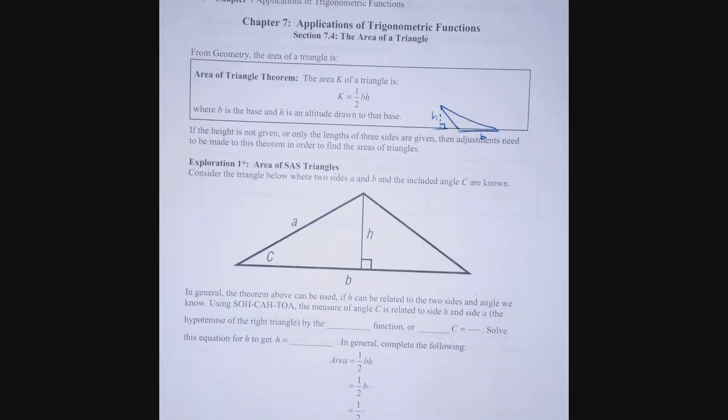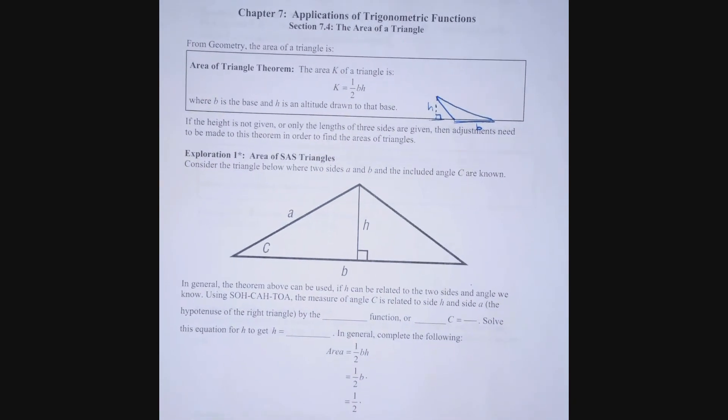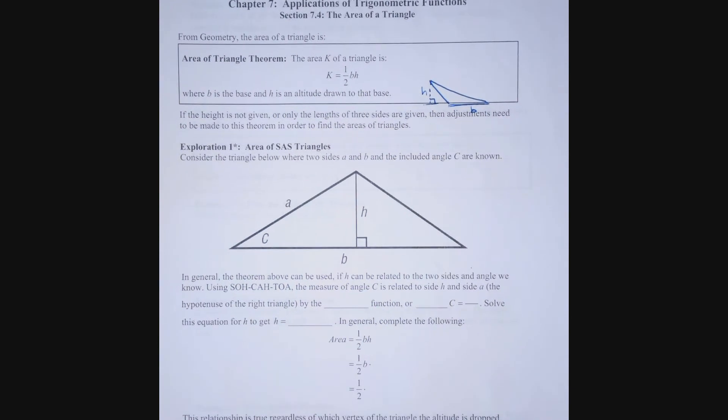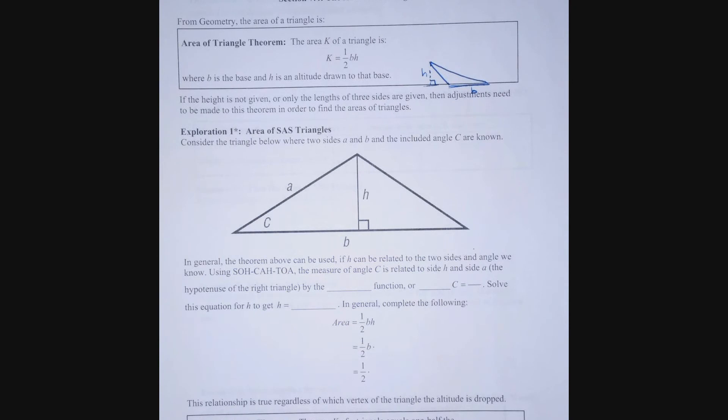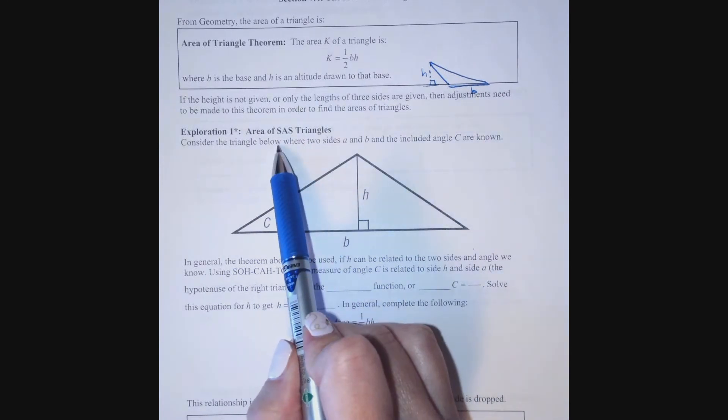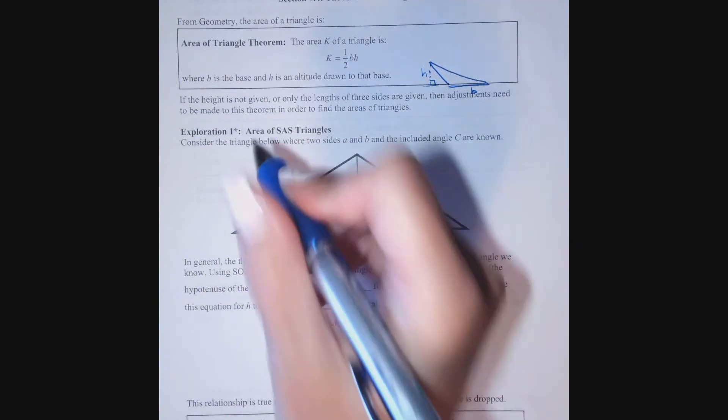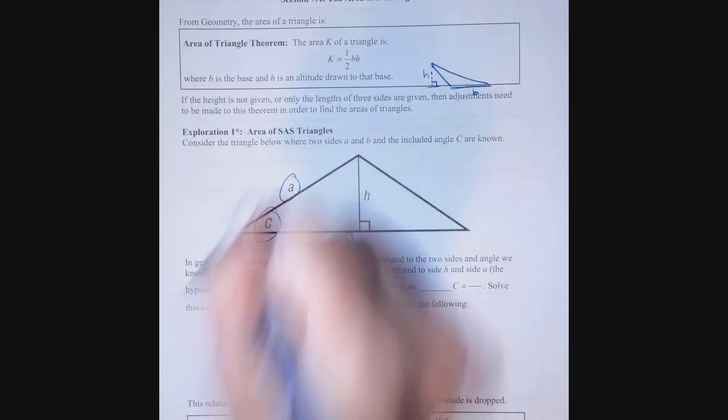If the height is not given or only the lengths of three sides are given, then adjustments have to be made to the theorem in order to find the area of the triangle. What if we're given information on side, angle, side? Well, consider this triangle where I know two sides and the included angle.